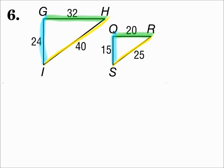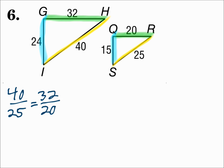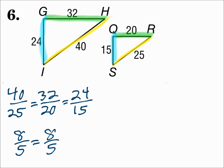Set up your proportion and see if it works: 40 over 25 equals 32 over 20 equals 24 over 15. If those are equal, then the three pairs of sides are proportional and the triangles are similar. Each of those fractions reduces to 8 fifths, so they're proportional. Yes, these triangles are similar.